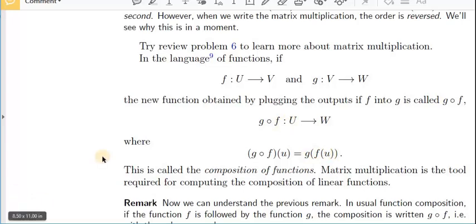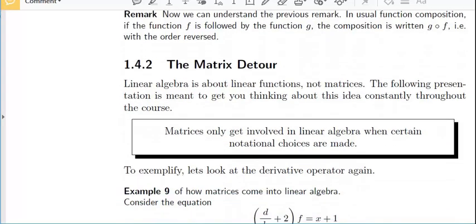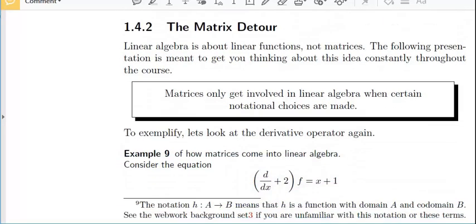Now, notice that here the F came first and the G came second. But here, when I write it this way, I write G of F of X. F is first, G is second because the F is inside the parentheses. So you've seen this before that when you compose functions, you do write them in reverse order. The initial function is on the right. The subsequent function is on the left.